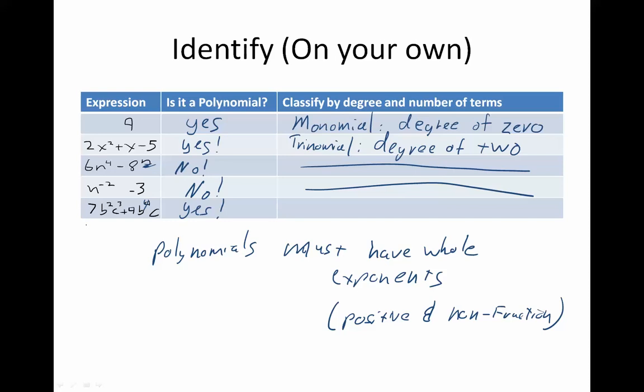How many terms does this have? 1, 2. So, this is a binomial. And the degree of, let's see, 2, 3, 4. Highest number is 4. Degree of 4.